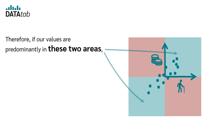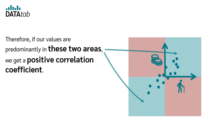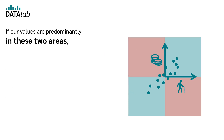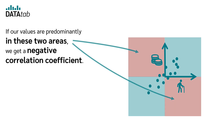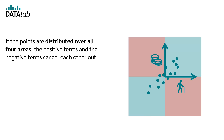Therefore, if our values are predominantly in the two positive areas, we get a positive correlation coefficient and thus a positive relationship. If our values are predominantly in the two negative areas, we get a negative correlation coefficient and thus a negative relationship. If the points are distributed over all four areas, the positive and negative terms cancel each other out and we get a very small or no correlation.